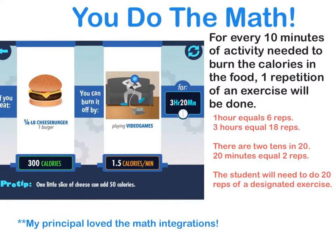1 hour equals 6 reps. Therefore, the 3 hours would equal 18 reps. There are two 10s in 20 minutes, so 20 minutes equals 2 reps. The student will need to do a total of 20 reps of a designated exercise.